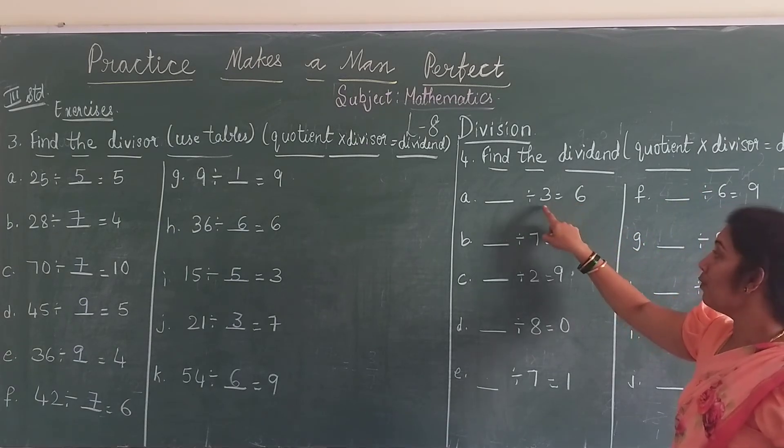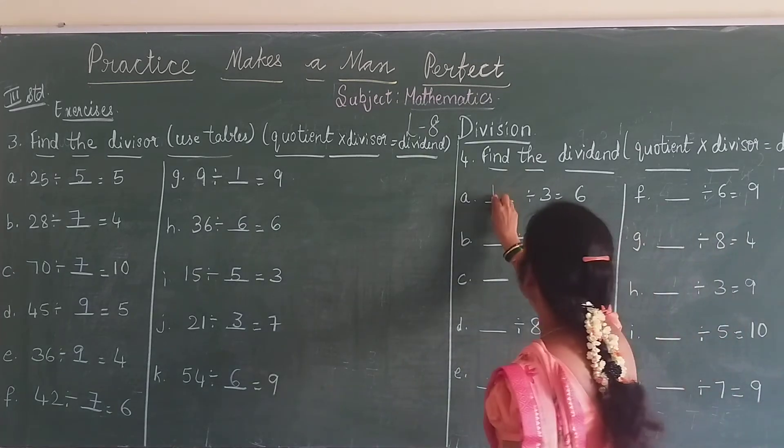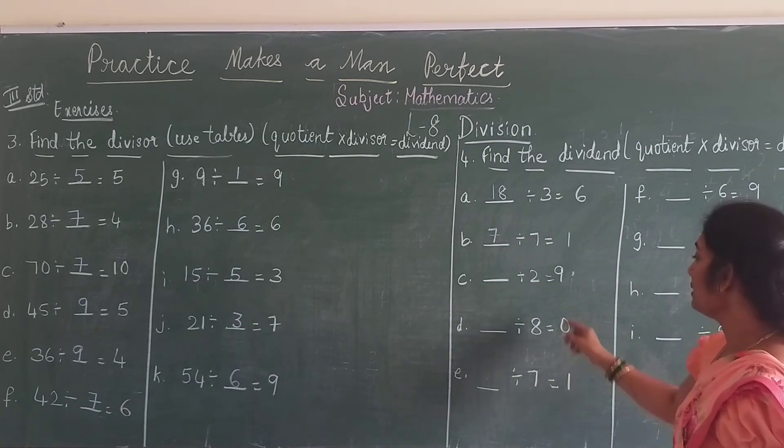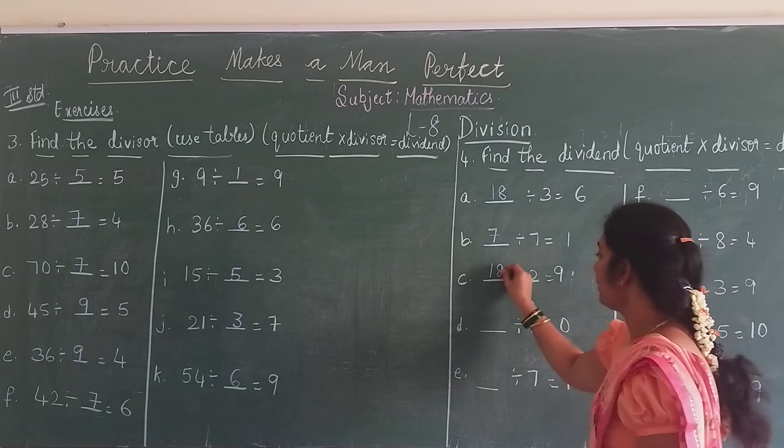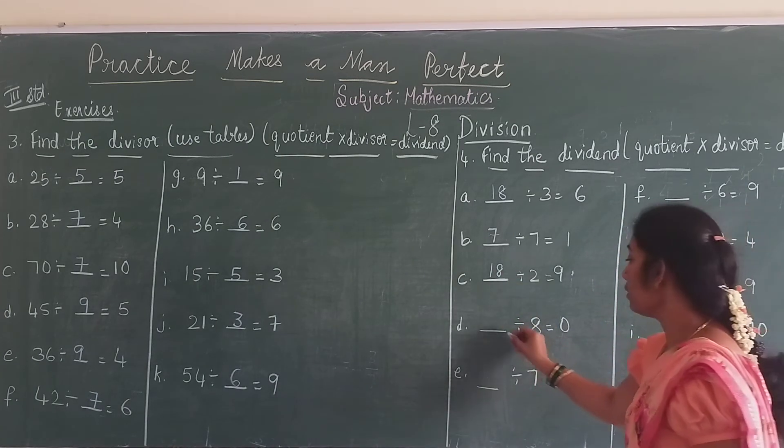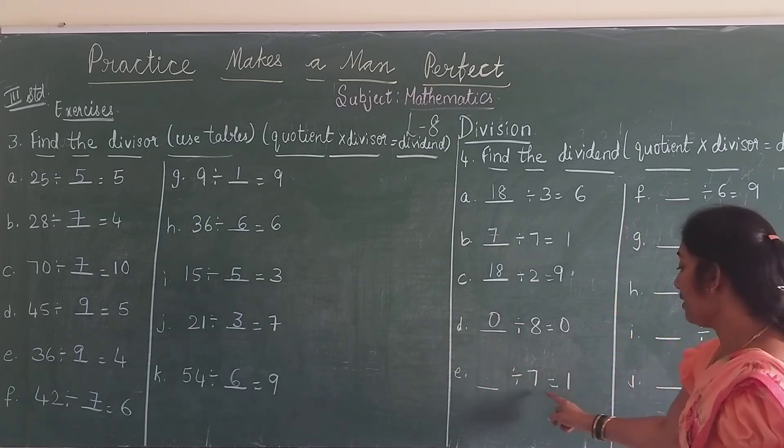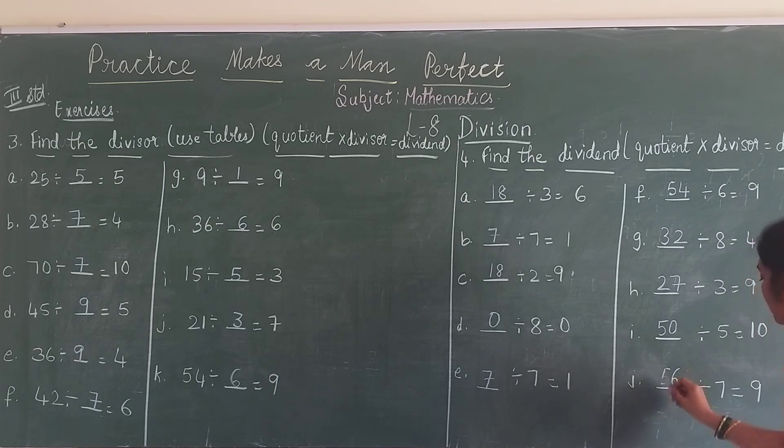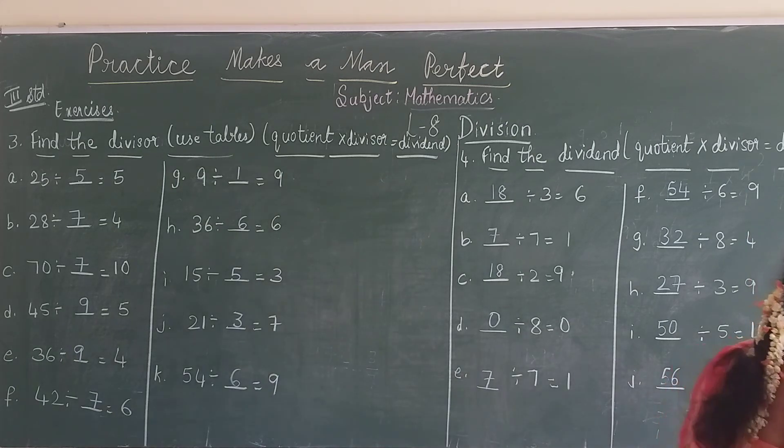So quotient into divisor will become your dividend. What is quotient? 6. What is your divisor? 3. 6 threes are 18. Next, 7 ones are 7. Next, 9 twos are 18. 0 divided by 8, any number divided by 0, the answer is 0. 7 ones are 7. Next, 6 nines are, 9 sixes are 54. 8 fours are 32, 9 threes are 27, 10 fives are 50, 9 sevens are 63.